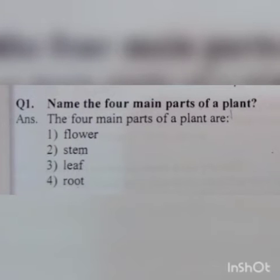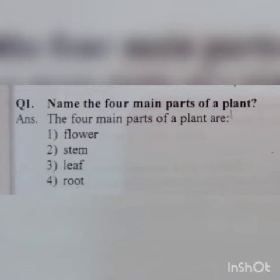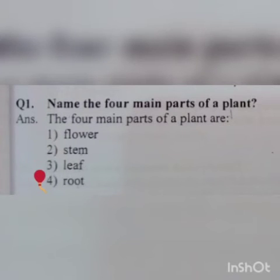Question number 1: Name the four main parts of a plant. پودوں کے چار main حصوں کے نام بتائیں۔ The four main parts of a plant are: Number 1 Flower, Number 2 Stem, Number 3 Leaf, Number 4 Root.